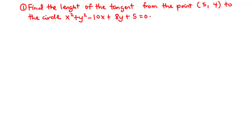At this point we are going to learn how to find the length of a tangent from a point on the circle, and also the conditions for a line to be a tangent to a circle.